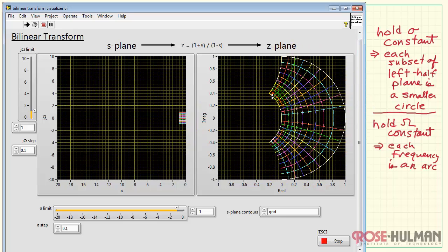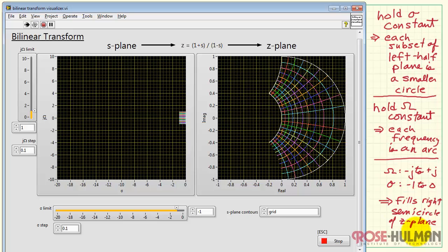If I confine our area of study to simply between 0 and 1, or actually negative 1 to 1, we see that fills up about half of the z-plane. So we say as capital omega ranges from minus j to plus j, and sigma goes from minus 1 to 0, that little square basically fills the right semicircle of the z-plane.